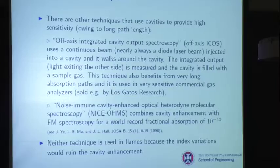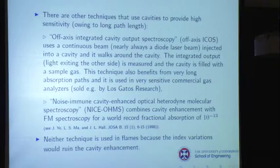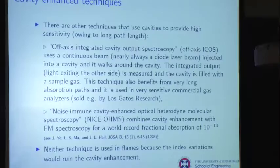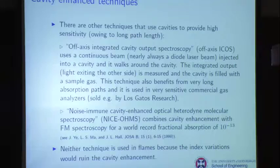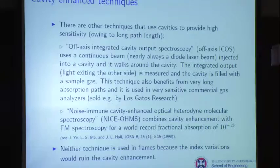There are other cavity-enhanced techniques. Off-axis integrated cavity output spectroscopy uses a CW laser. It's basically a cavity that looks like a Fabry-Perot with curved mirrors — you launch light in, allow it to bounce back and forth a lot, average what comes out, and scan the wavelength. It does have cavity enhancement in the absorption measurement. The reason people typically don't use it in combustion is that a flame inside the cavity tends to steer light around and cause noise, so it doesn't work as well.